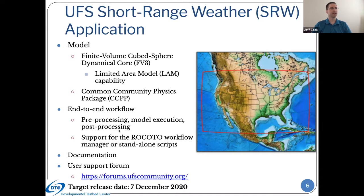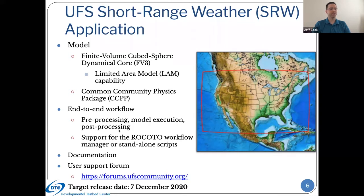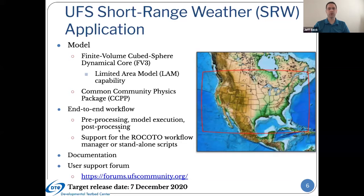In general, the short-range weather app consists of the FV3 model with the LAM version of FV3. It also consists of CCPP, which you've heard a lot about already — a critical component to allow us to swap in and out different suite definition files or different physics suites. The short-range weather app first release is going to consist of two suite definition files — one targeted for a coarser resolution and another targeted for the future RFS configuration. The application also consists of an end-to-end workflow, which has preprocessing, model execution, and post-processing included. It also contains a Rocoto workflow manager XML file, automatically generated based on configuration settings the user sets.